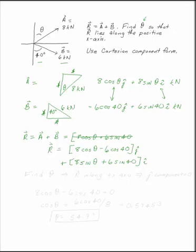What we're asked to do is find theta so that R is along the positive x-axis. Well if R is along the positive x-axis, what that means is the j component has to be equal to 0. So let's set that j component equal to 0: 8 cosine theta minus 6 cosine 40 equals 0. Cosine theta is 6 cosine 40 divided by 8, or theta is 54.9 degrees.